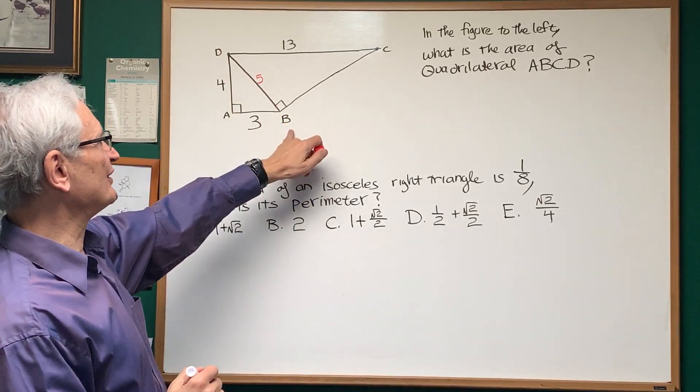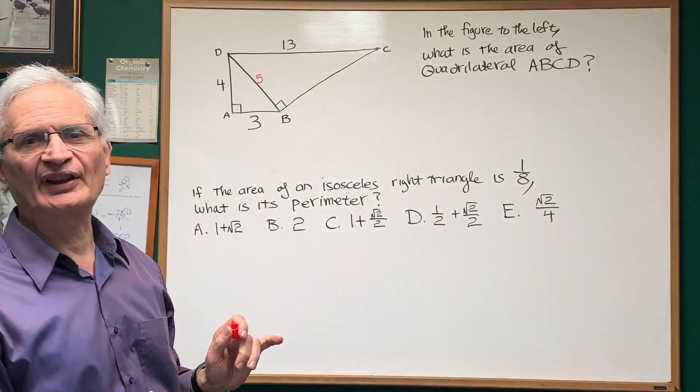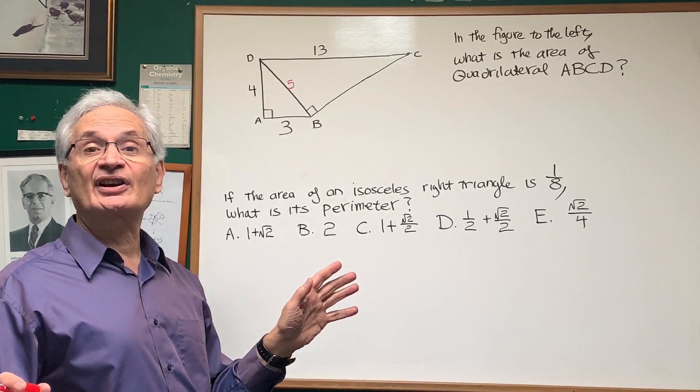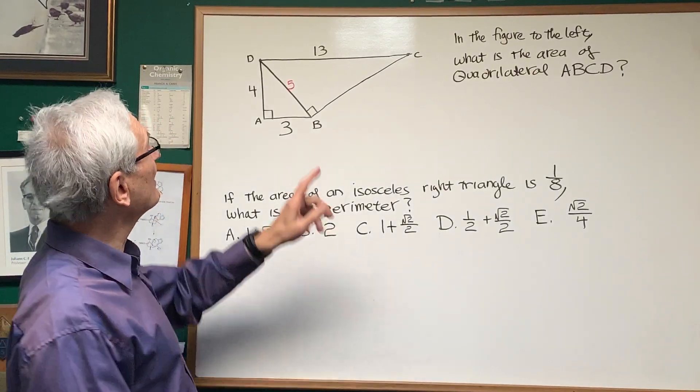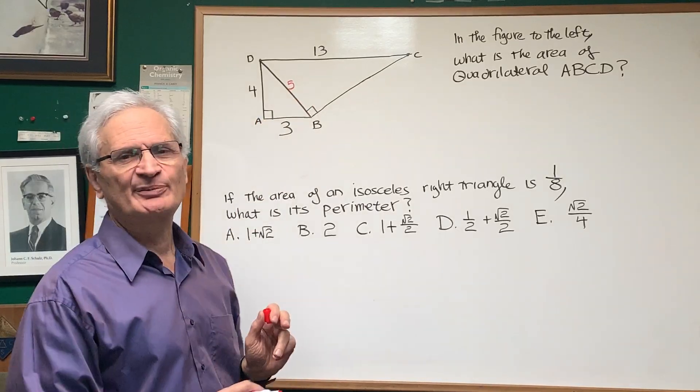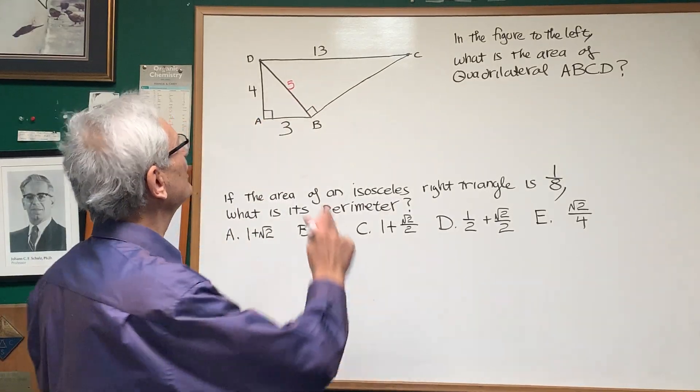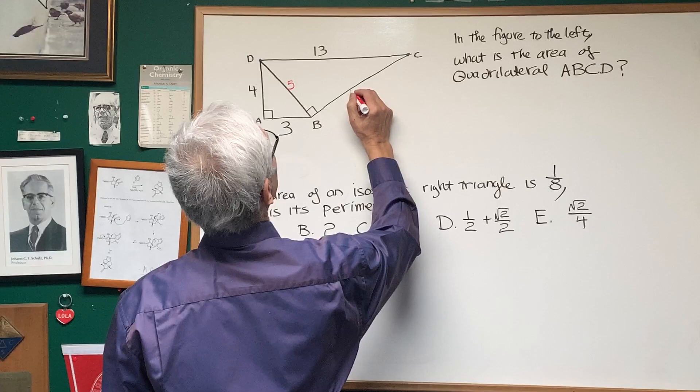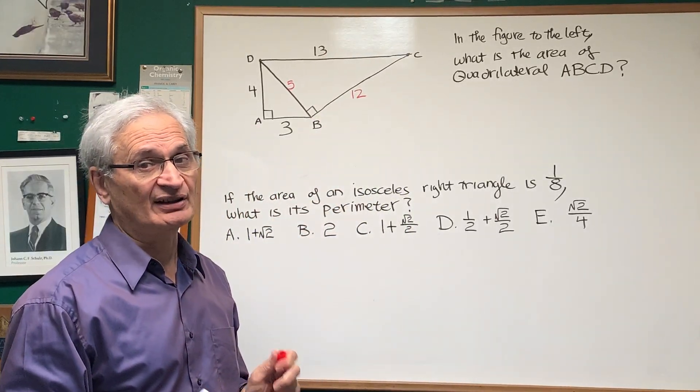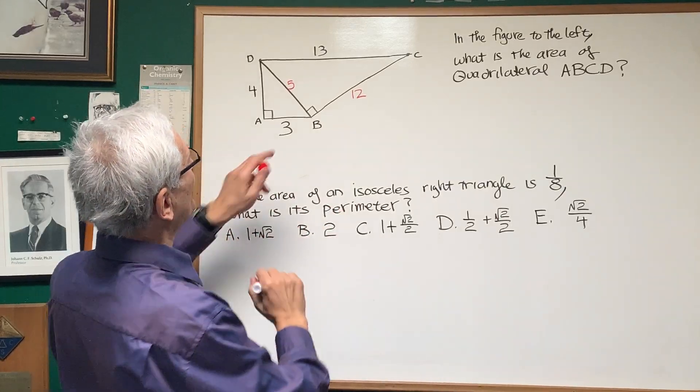Now, in order to do that, we'll have to calculate the value of the length BC. Now, here comes another reference right triangle. You should have, just as you know the three, four, five proportions form a right triangle, you should know the five, twelve, thirteen right triangle.